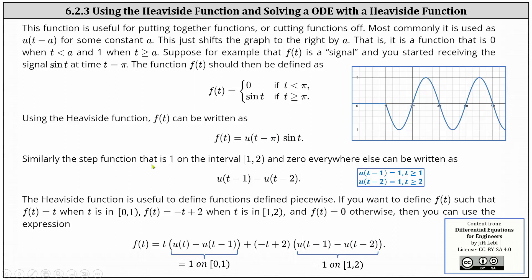Similarly, the step function that is one on the interval from one to two — closed on one, open on two — and zero everywhere else can be written as u(t − 1) minus u(t − 2).